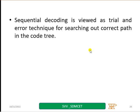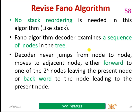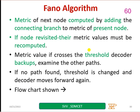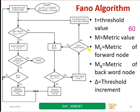Sequential decoding is viewed as a trial and error technique for searching out a correct path in the code tree. You can go through, again, the Fano algorithm theory what we have shown in the beginning. You can go through the steps and the flow chart also so that now it will be easy for you to understand the concept.